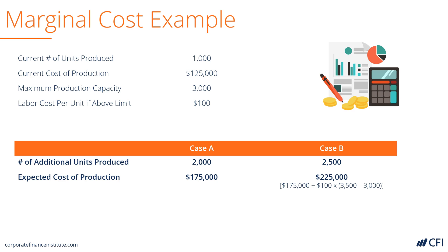In case B, the company is going to produce 2,500 more units. That pushes it over and above the production capacity. But the firm can go beyond its capacity by paying an extra $100 per unit for the additional labor that's required, so it costs $225,000 in case B.